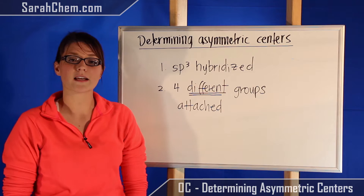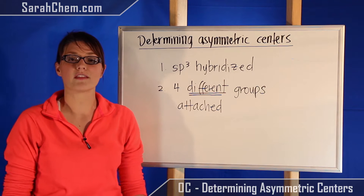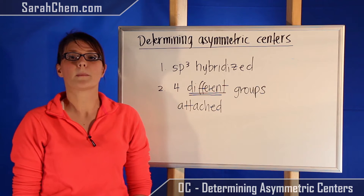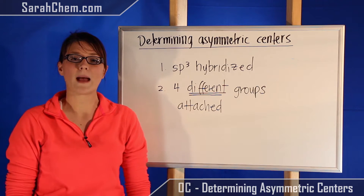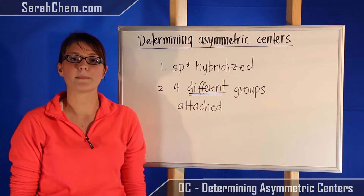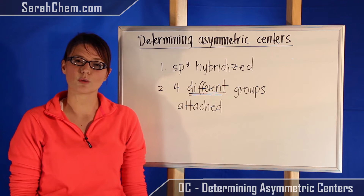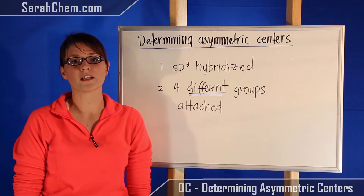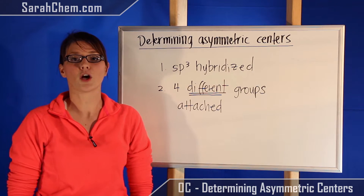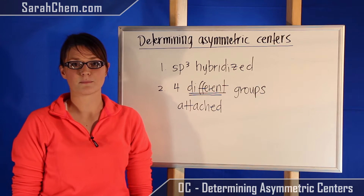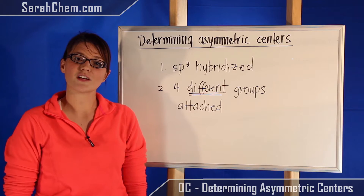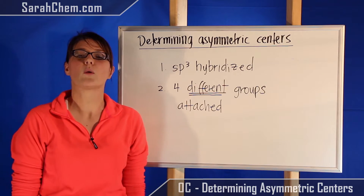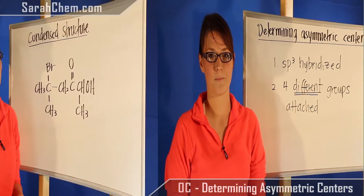You can have other atoms like nitrogen that are asymmetric centers, but because of a rapid inversion that happens we typically don't look at them. We're usually only going to be looking at carbon specifically. So let's take a look at a few examples and see if we can figure out where the asymmetric centers are.